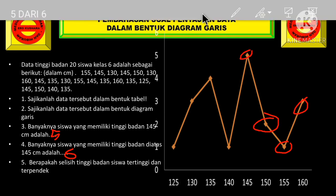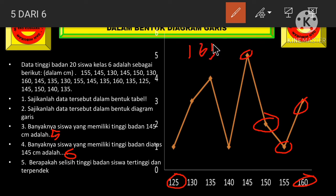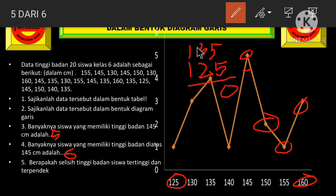Dan soal yang terakhir adalah berapakah selisih tinggi badan siswa tertinggi dan terpendek. Siswa tertingginya adalah 160 cm dan yang terpendeknya adalah 125 cm. 160 dikurangi 125. 5 dikurangi 5 sama dengan 0, 6 dikurangi 2 sama dengan 4. Berarti selisihnya adalah 40 cm.